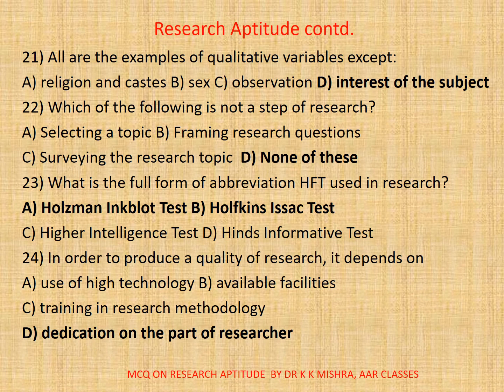Question twenty-one: All of the following are examples of qualitative variables EXCEPT A: Religion and caste. B: Sex. C: Observation. D: Interest of the subject. The correct option is D: Interest of the subject.